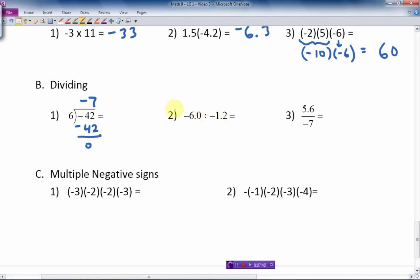Okay. 6.0 divided by negative 1.2. Those signs are different signs. Therefore, the answer is going to be positive. And 6 divided by 1.2 is exactly 5.0 or 5. And so, and it's just positive. Negative divided by negative is a positive. Same sign.